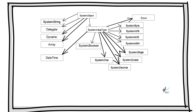Note that value types — for example, int, char, bool, and decimal in C-sharp — inherit from the System.ValueType abstract class, which ultimately derives from the System.Object class. These primitive types can all easily be converted to strings.